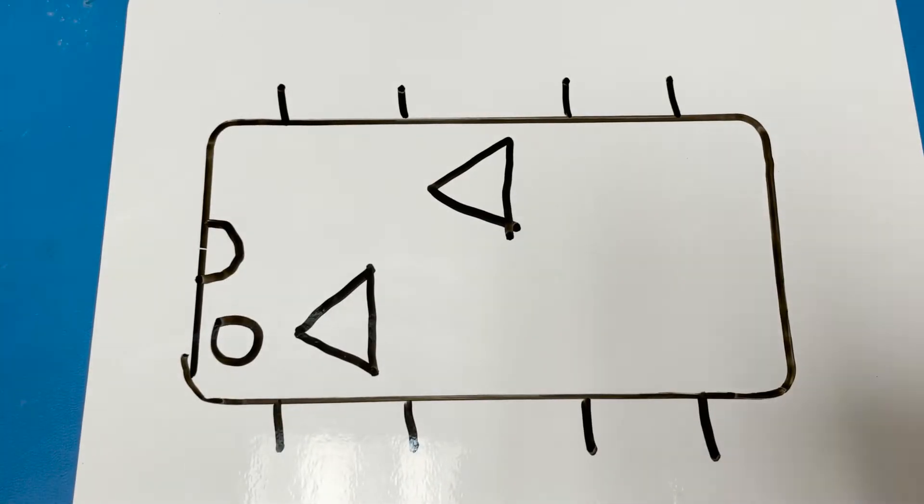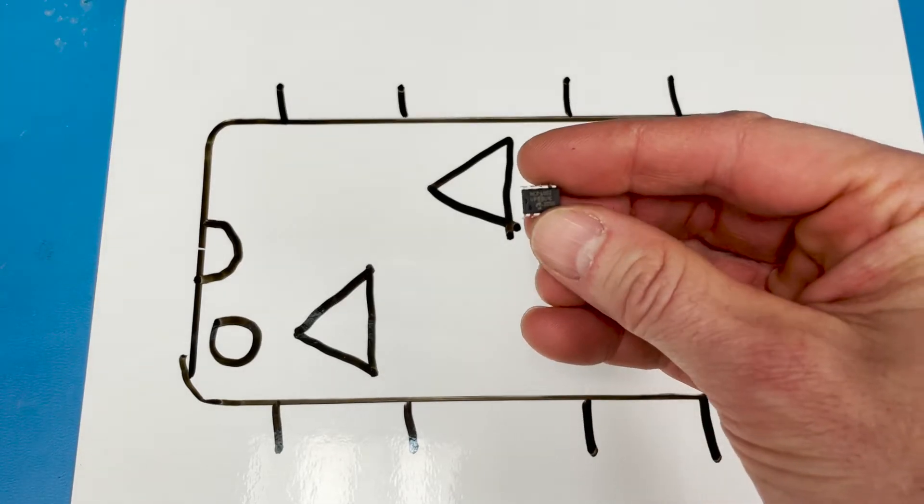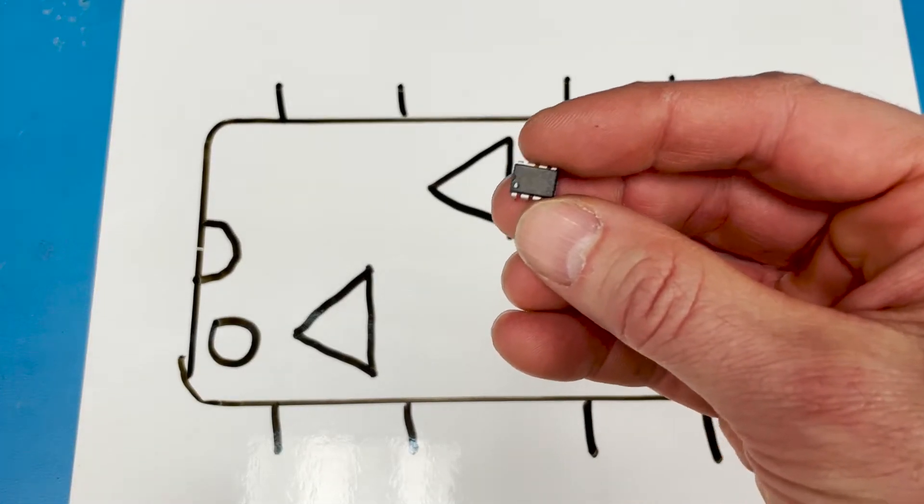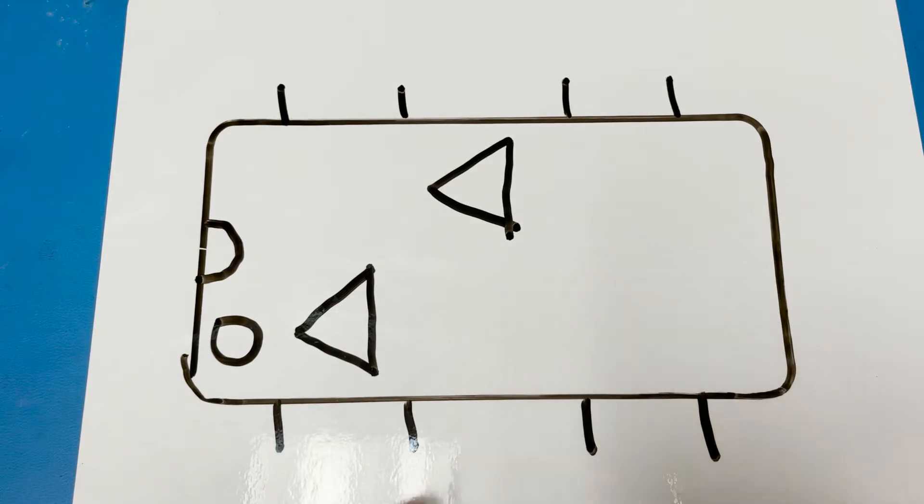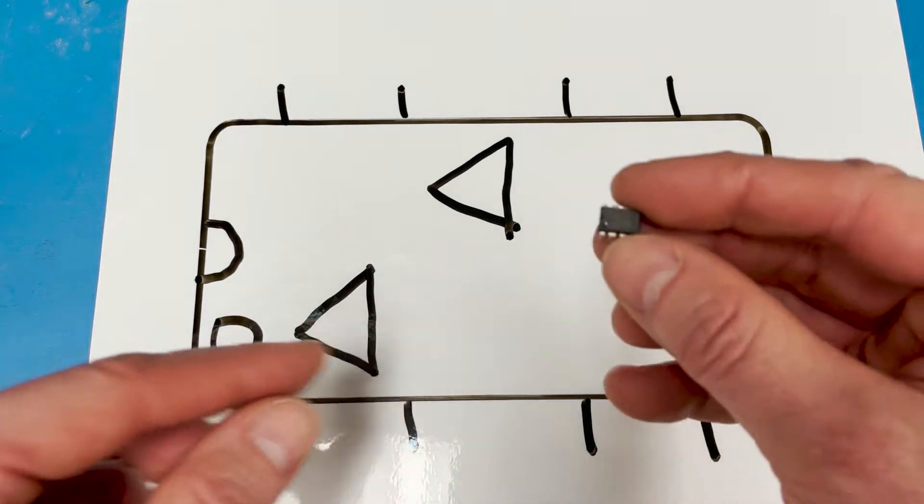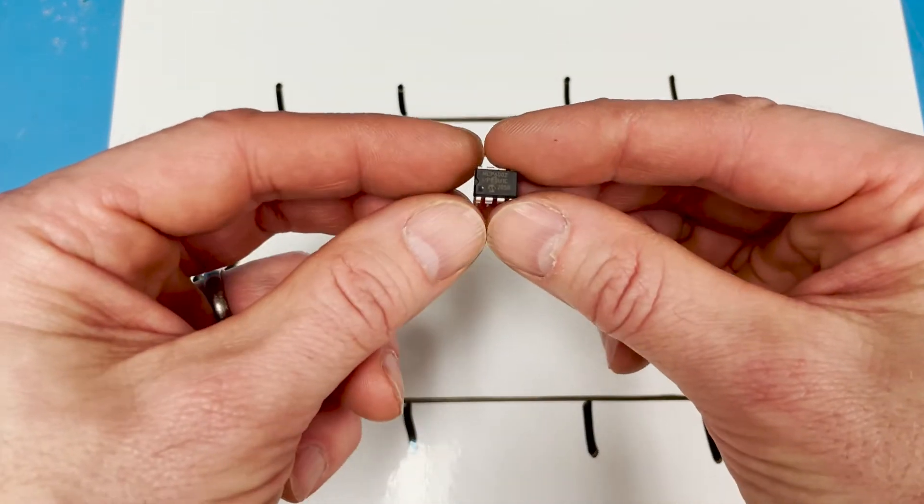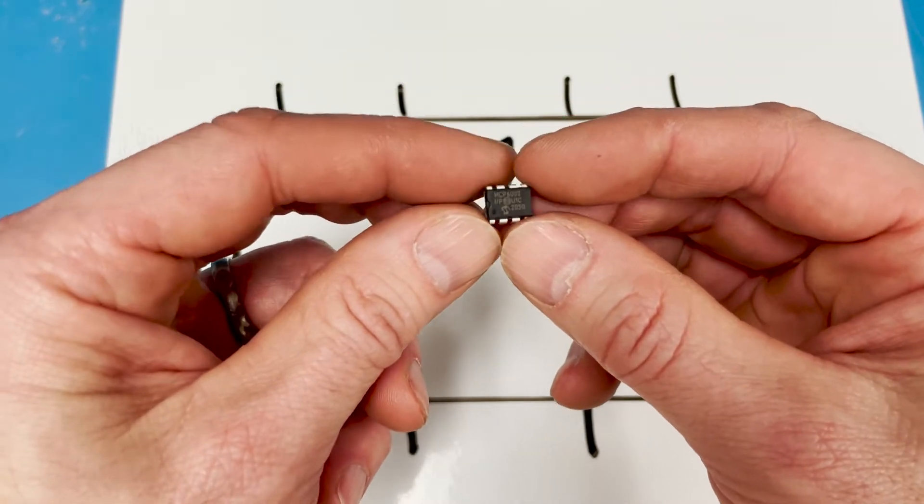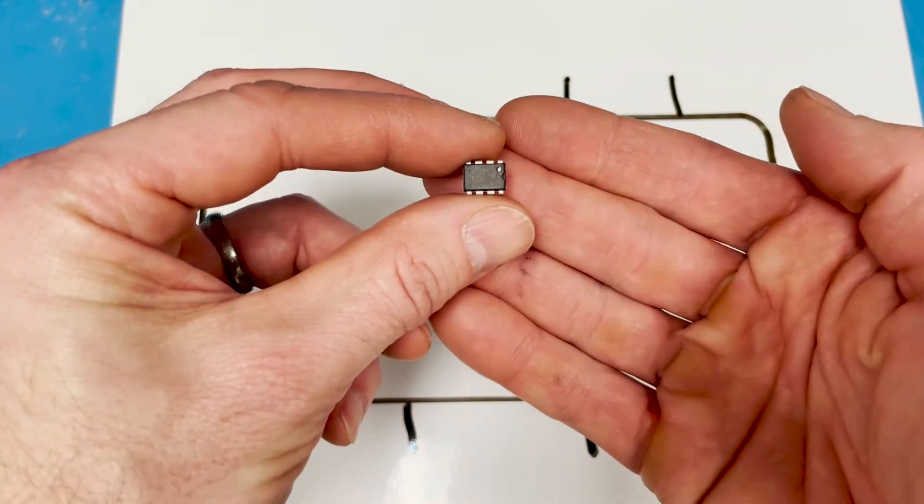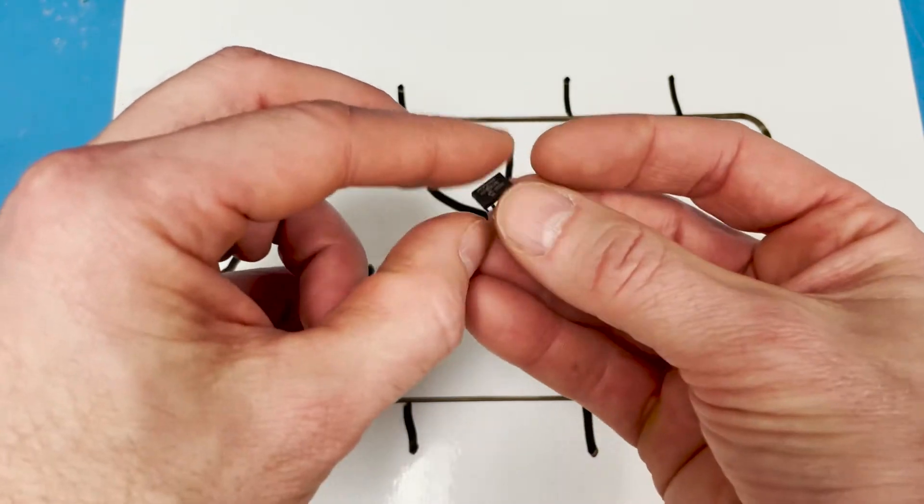So we have our device, our MCP6002, and it has 8 pins on it. So these leads right here represent the pins, so this box is the package. And the pins are unique, in other words, if you put it in the breadboard in this orientation or that orientation, things are going to be different.